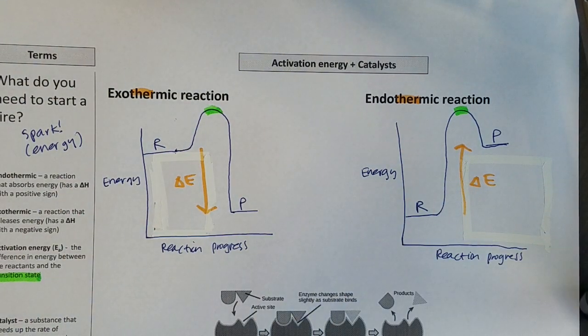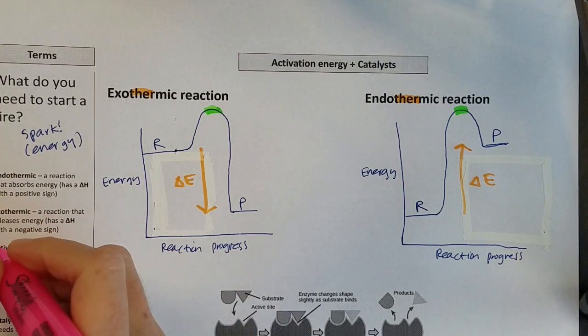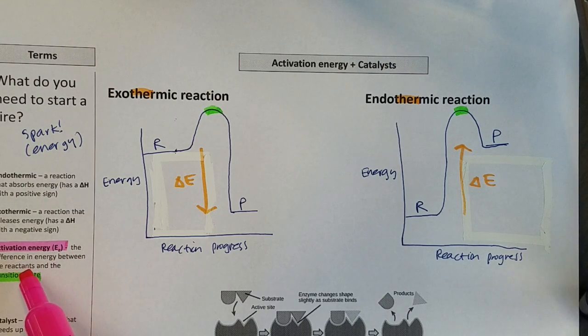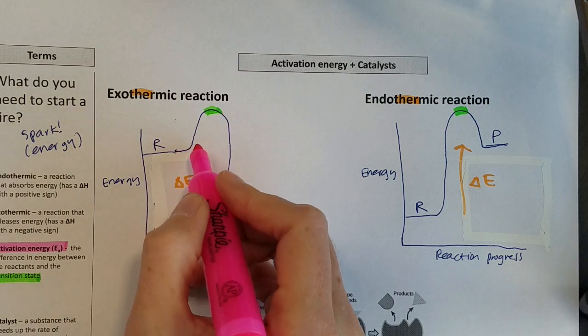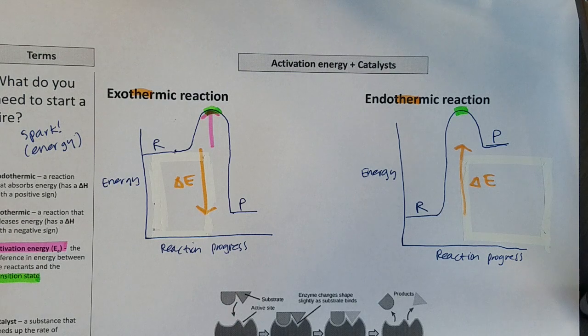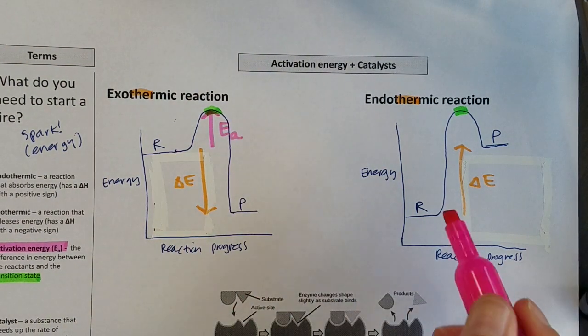But now we have another energy to add on here, and that's going to be our activation energy. So activation energy is the difference in energy between the reactants and the transition state. So I want to find my reactants, and I want to look at how much energy does it take to get up to the transition state. That would be my E sub A, or activation energy.